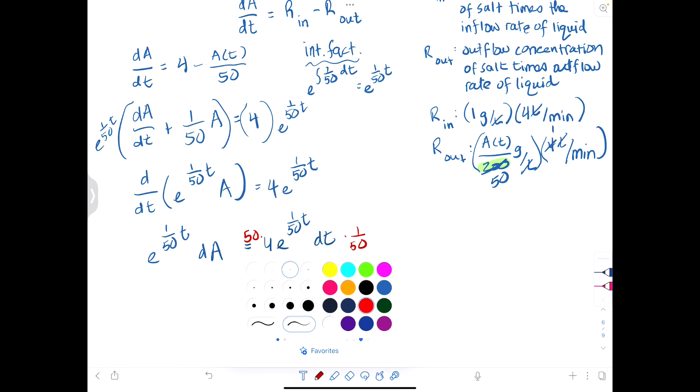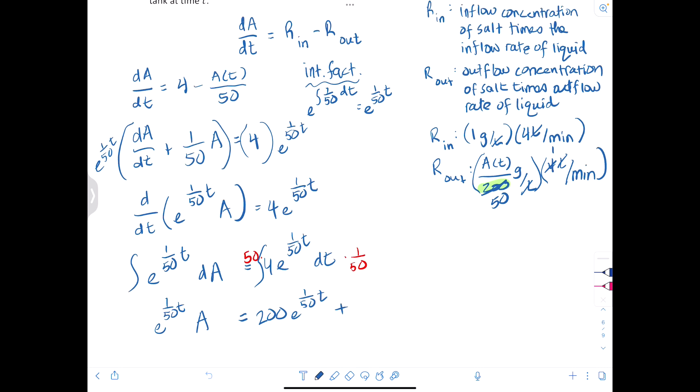And then integrating we'll have e to the t/50 times A equals 200 e to the t/50 plus our constant of integration.